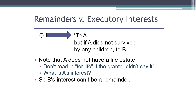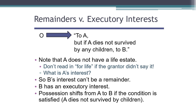What is it? It's an executory interest. But this executory interest is of a particular kind — we call it a shifting executory interest because possession will shift from A to B in the future if the condition on the executory interest is satisfied, that is, A dies not survived by any children. So when we have a case where property shifts from one person to another and the second person has an executory interest, we call that a shifting executory interest.